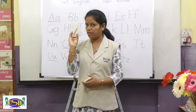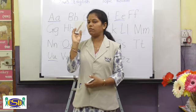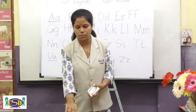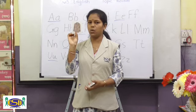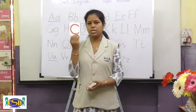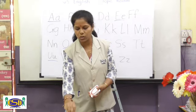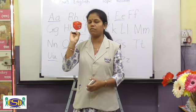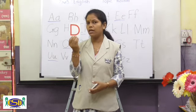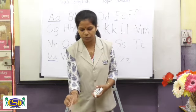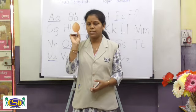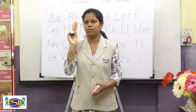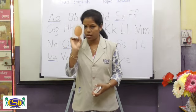What is this? Bat. Bat starts from which letter? B — B as in Bat. Good. What is this? Code. It starts from which letter? C — C as in Code. What is this? Dice. Dice starts from which letter? D — D as in Dice. What is this? This is an Egg. Egg starts from which letter? E — E as in Egg.